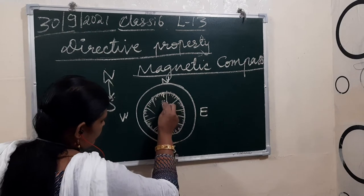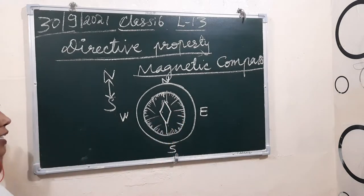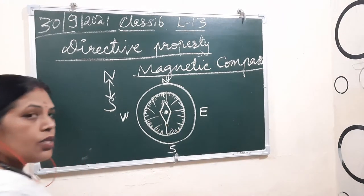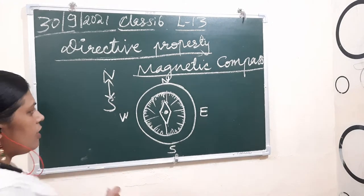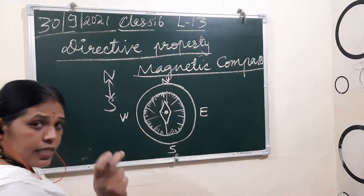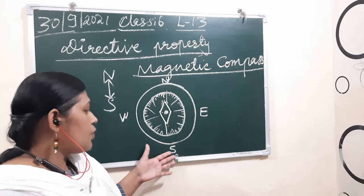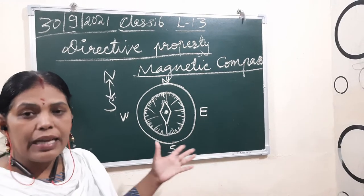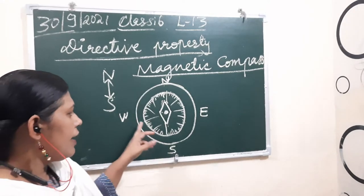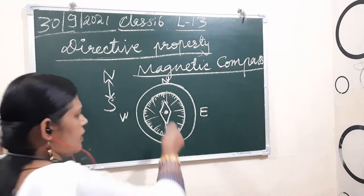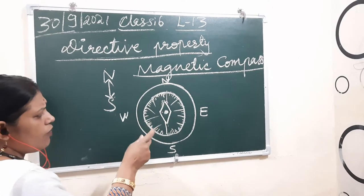Inside the compass there is a needle. This needle is fixed at the middle portion and rotates freely. When it is at rest, it comes to the north-south direction. Navigators carrying ships also used this to find directions — you simply rotate it and it moves freely.